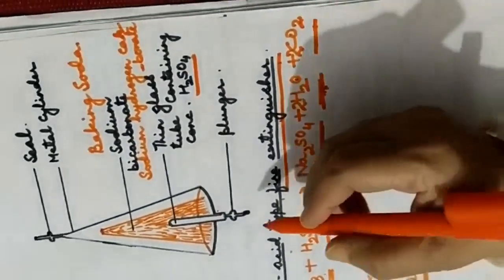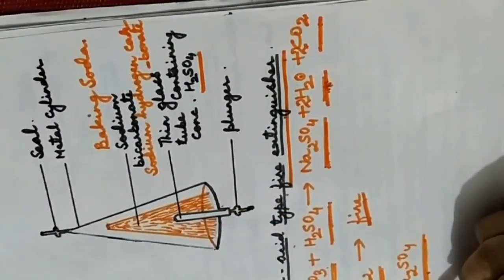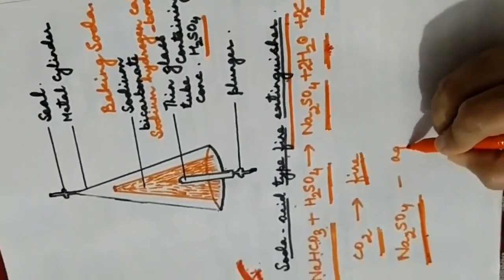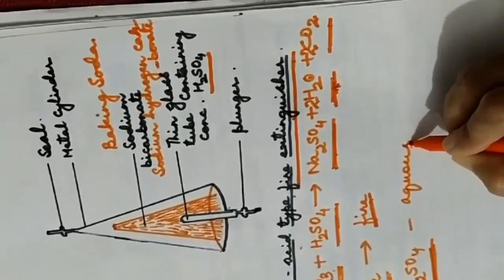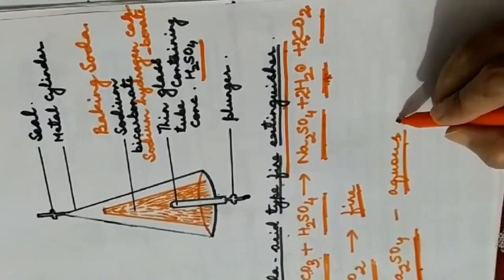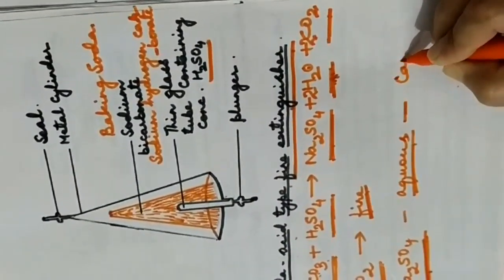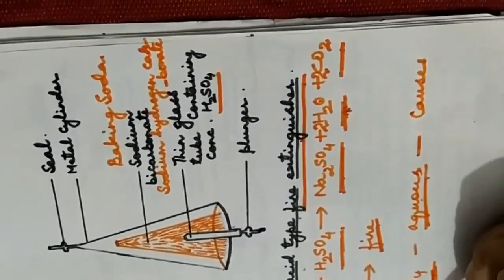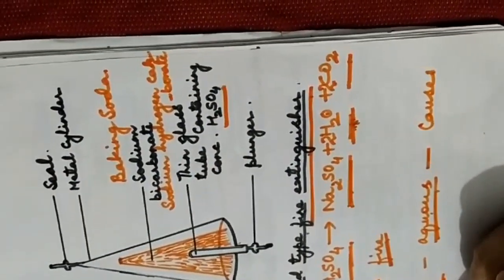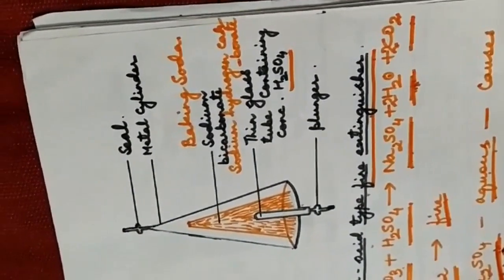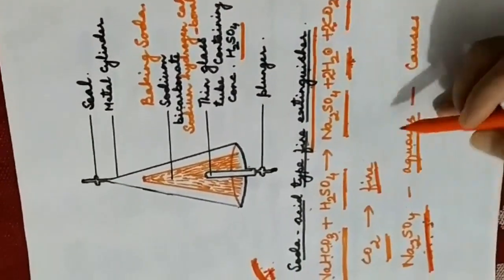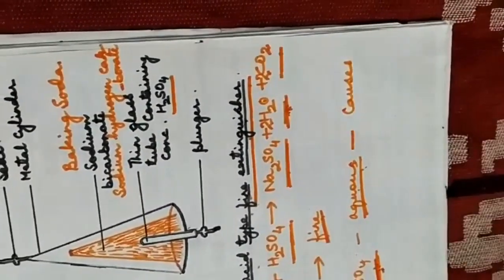One important thing: this soda acid type fire extinguisher should not be used to extinguish electrical fires. Why? Because sodium sulfate in its aqueous solution is a good conductor of electricity and can cause electrical shock. So it should not be used to put off fire caused by electricity.